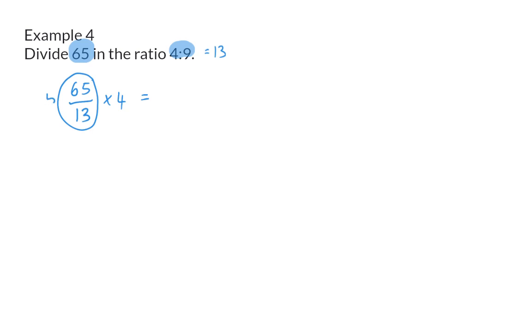65 divided by 13 is 5, which means one part is worth 5. So, our left-hand side will be 5 times 4, and that is 20. Our right-hand side will be 5 times 9, so that is 45. So, once this has been divided, I will have 20 and 45.